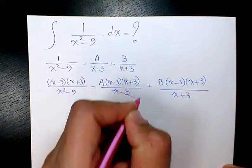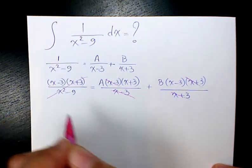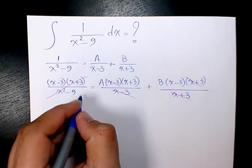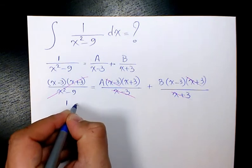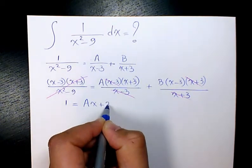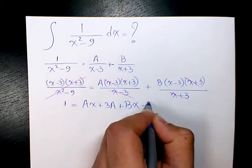We cancel this one and this one, and we cancel this one and this one. Therefore on the left hand side everything is going to cancel, the numerator and denominator cancel out and we have only 1. So when we reduce it's going to be 1 equals to A x plus 3A plus B x minus 3B.